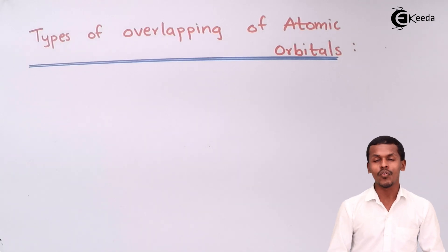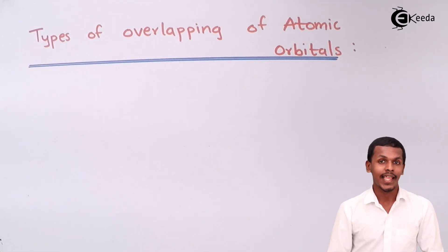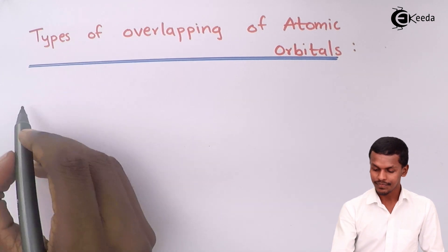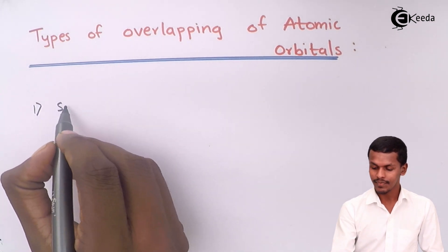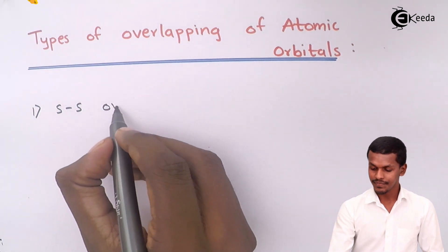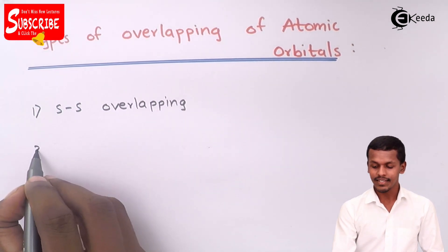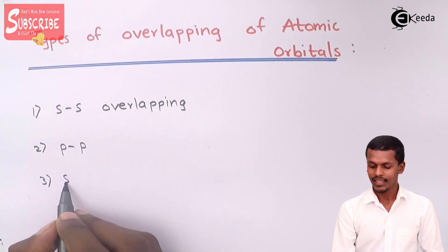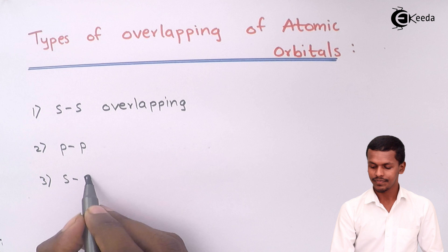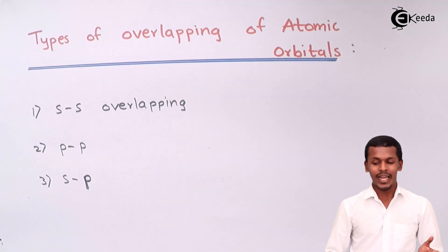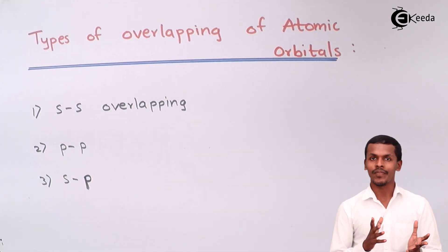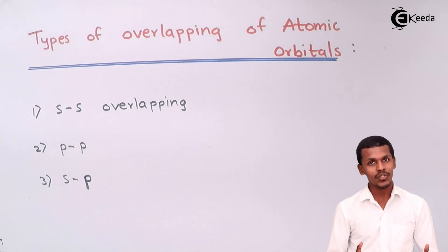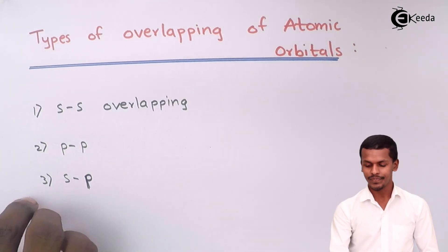During the formation of a covalent bond, we see there are three kinds of overlapping for the atomic orbitals. Those are basically SS overlapping, PP overlapping, and SP overlapping. These are the things we are going to discuss whenever a covalent bond has been formed. Let me discuss the first one, SS overlapping, with the help of an example.